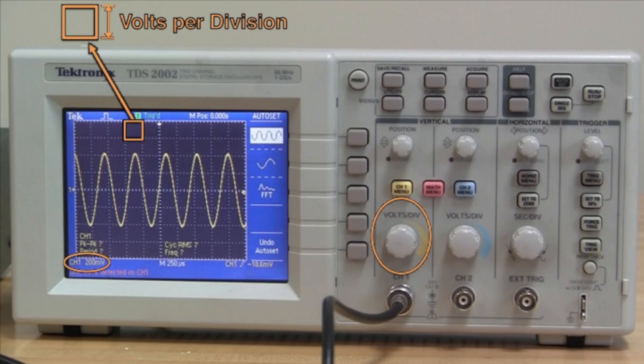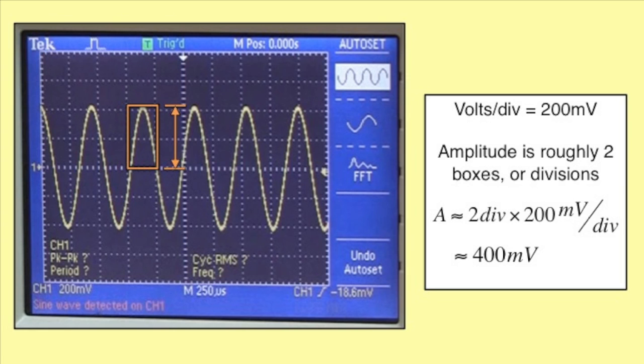Currently, the volts per division is set at 200 millivolts. If the amplitude of the oscillation is two boxes, or two divisions, we can obtain the amplitude in volts by multiplying these two divisions by 200 millivolts per division, giving us an amplitude of 400 millivolts.